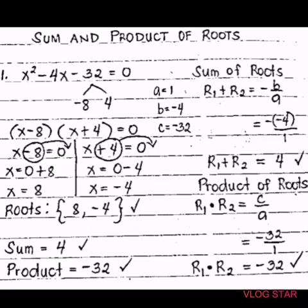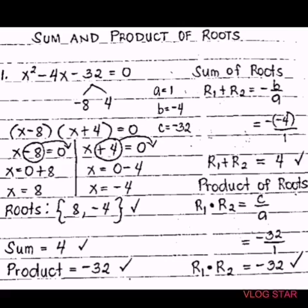To get the sum of the roots, we use the formula R₁ plus R₂ equals negative B over A. To get the values of A, B, and C, go back to the given quadratic equation. The value of A is 1, B is negative 4, and C is negative 32. Substituting into the sum of roots formula: negative times negative 4 over A which is 1. Negative times negative is positive, so the sum of roots is 4.